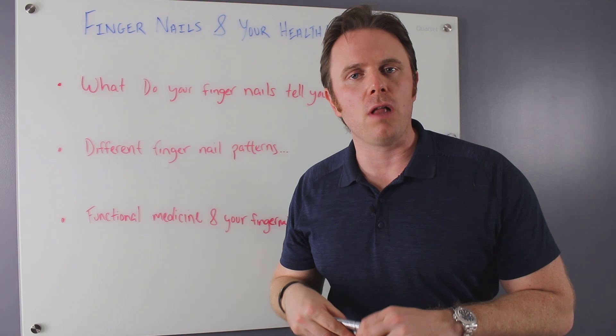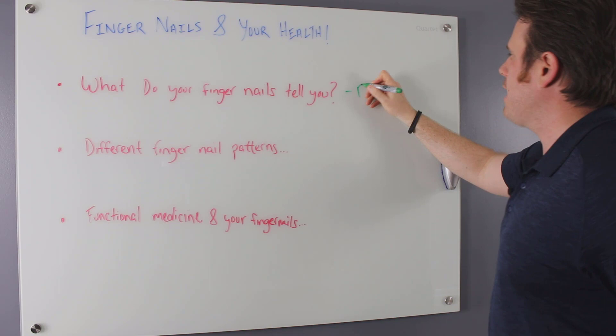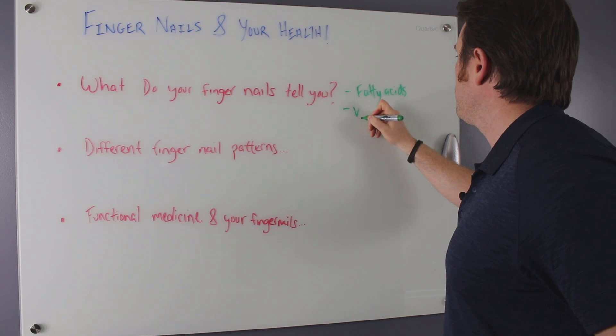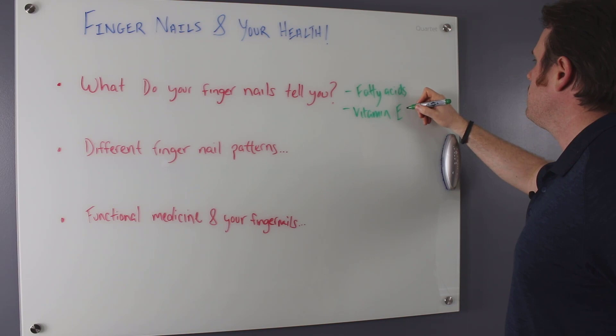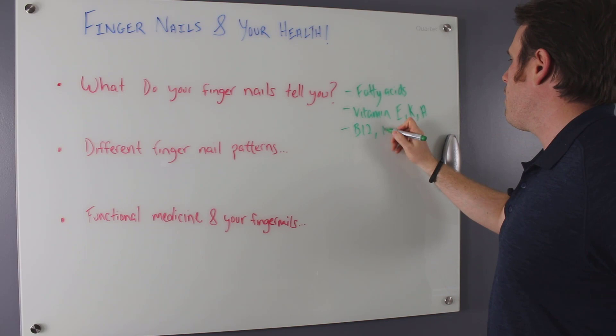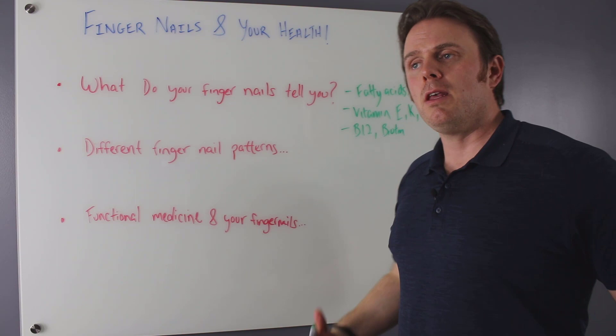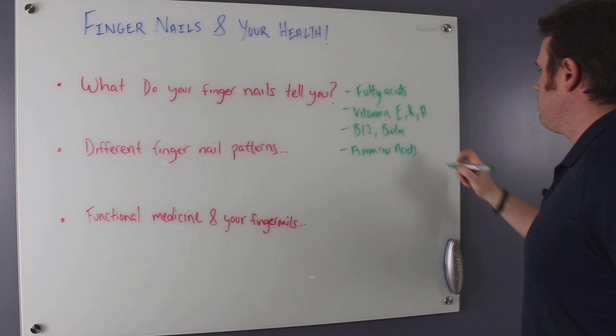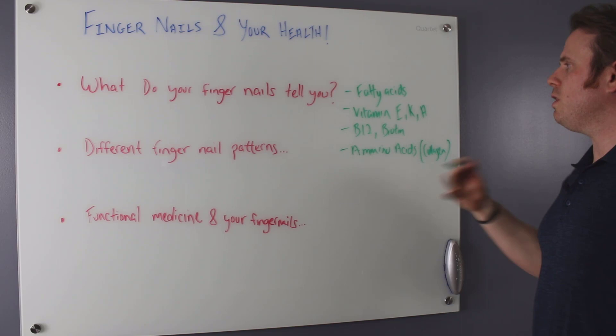What do your fingernails tell you? The first thing is, what are the key building blocks that go into making your fingernails? So one of the first things is going to be fats, fatty acids. So we have things like saturated fats, omega-3s, and fat soluble vitamins. The big ones are going to be E, K, and A for sure. These are really important building blocks. We also have B vitamins, B12, also biotin which is actually B7. And also amino acids are really big, and then collagen fits into this amino acid connection.